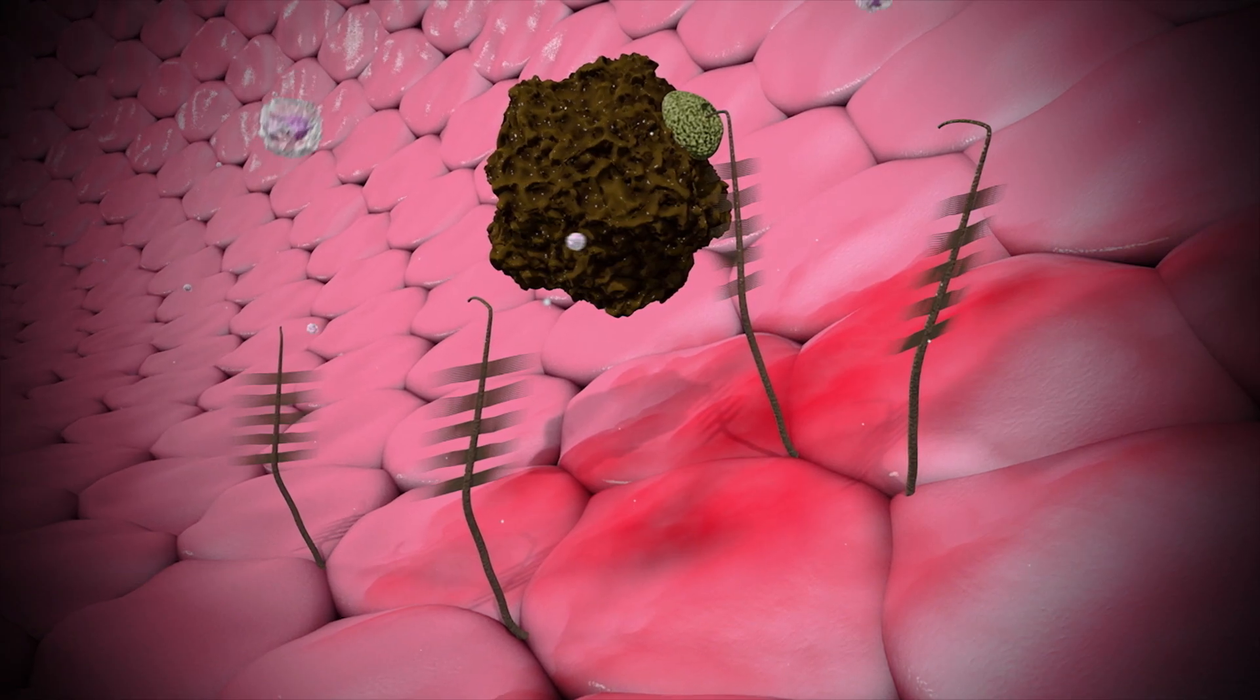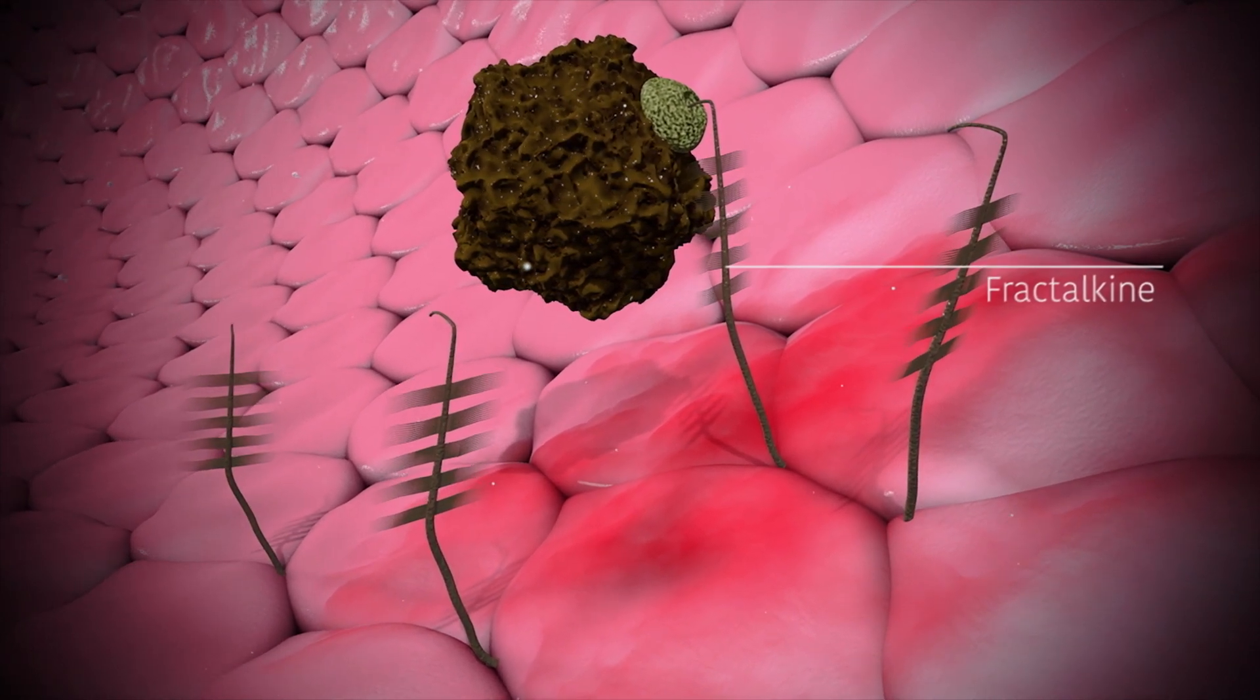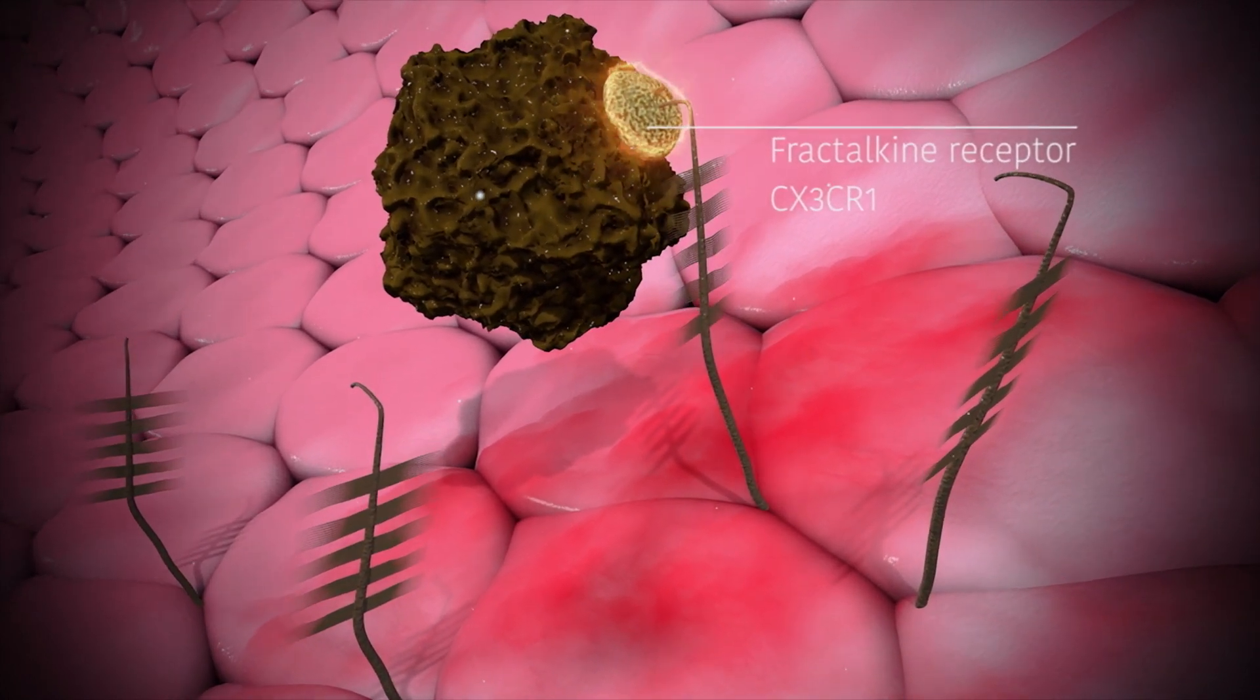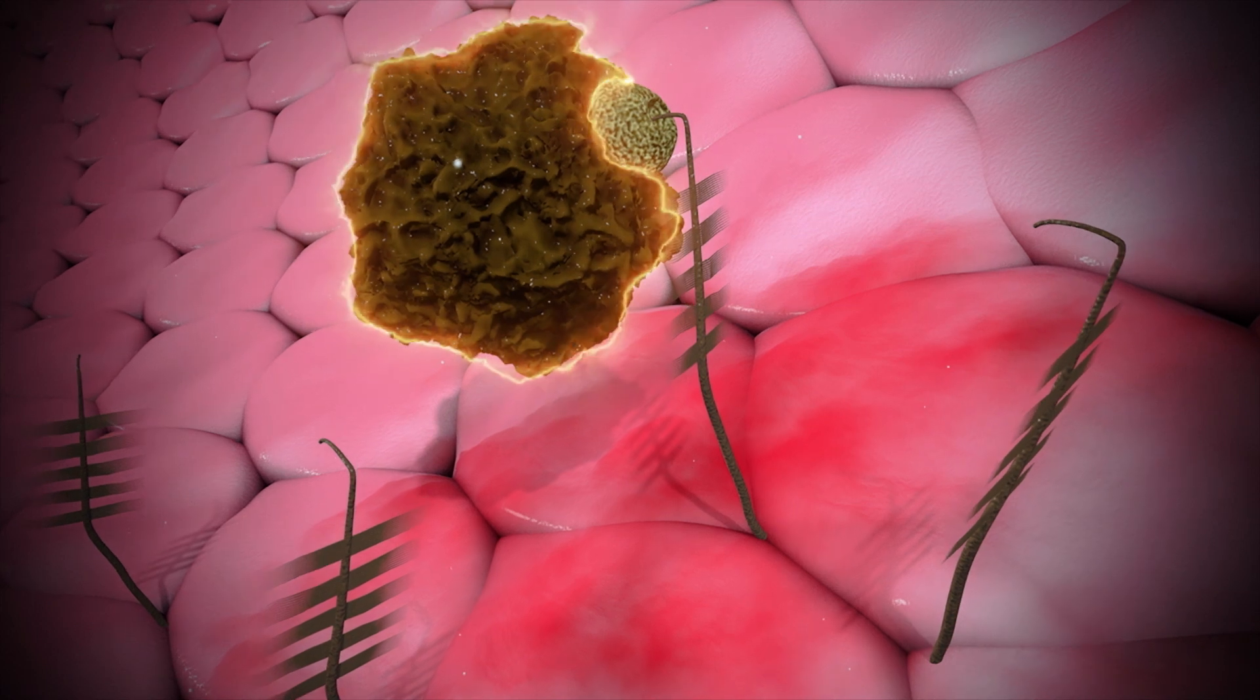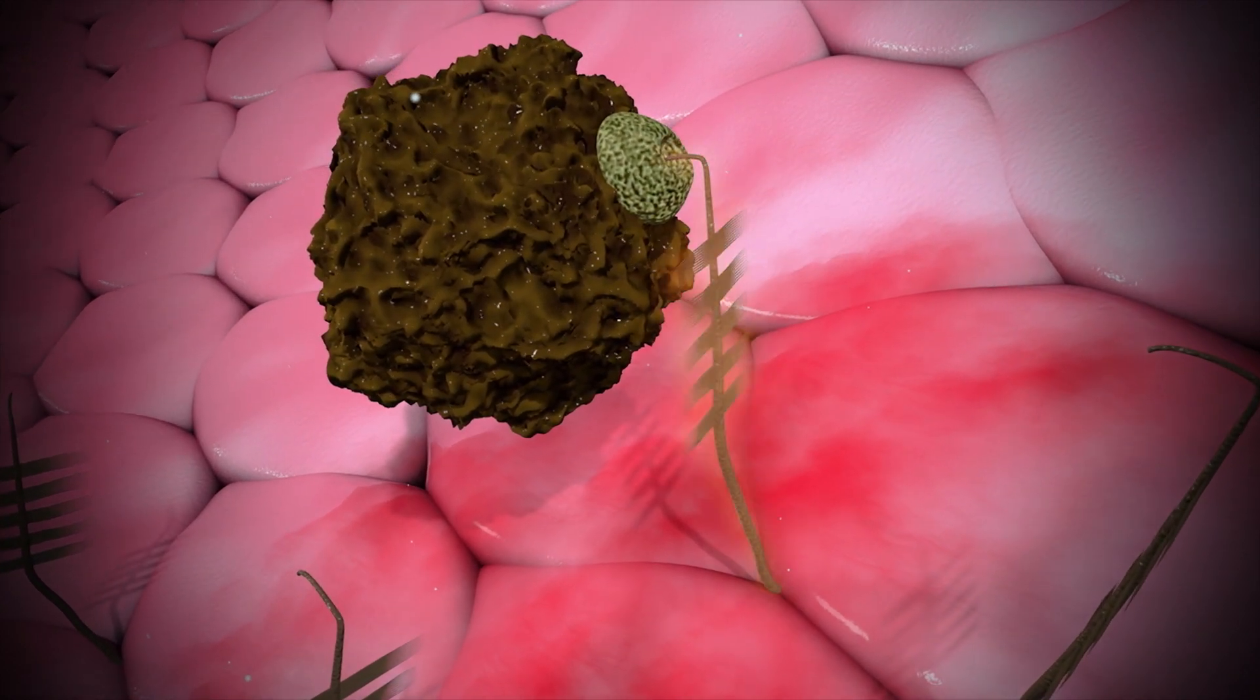The fractalkine system comprises fractalkine, which is a mediator of the signal, and its receptor CX3CR1. This receptor CX3CR1 binds the fractalkine and forwards its signal into the immune cell or cancer cell.